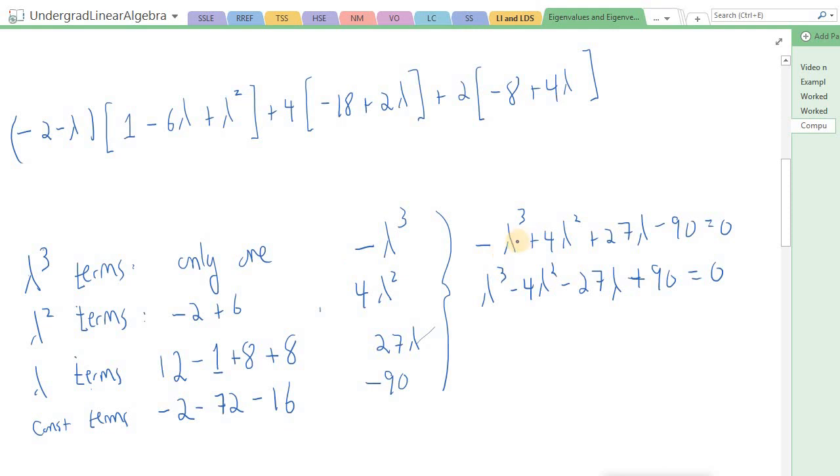And then I can group these together in a single polynomial. Minus lambda cubed plus 4 lambda squared plus 27 lambda minus 90. And to get the eigenvalues, you want to set this polynomial equal to 0. Now, usually when you deal with polynomials, you want the leading term to be a plus 1. So I multiply the whole polynomial by minus 1. And I get this.